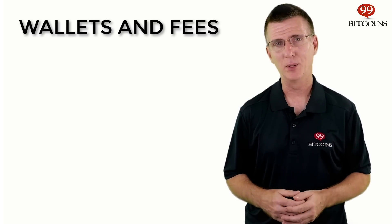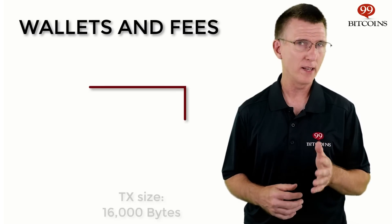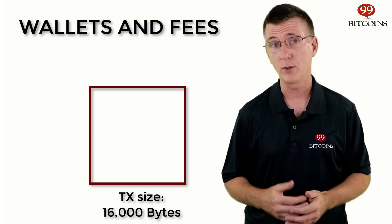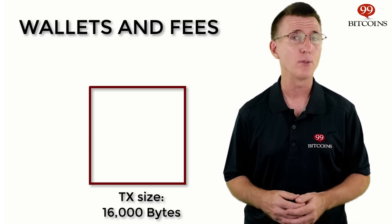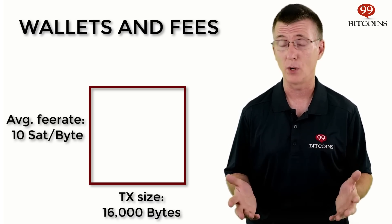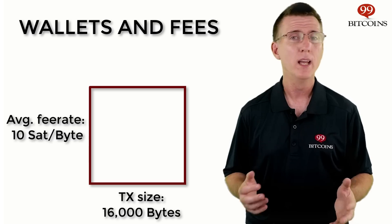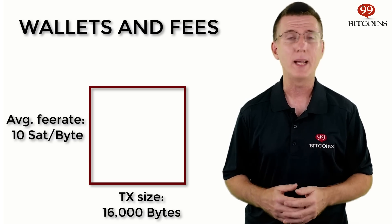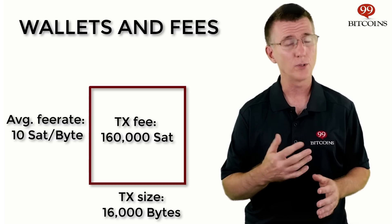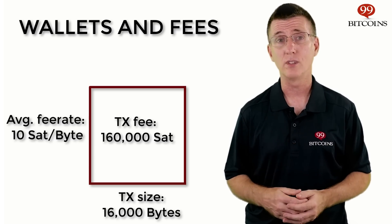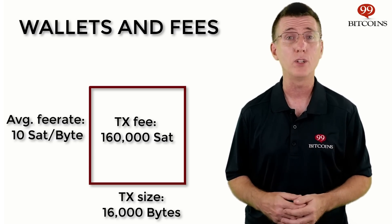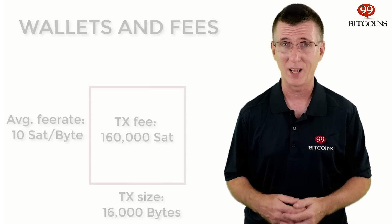Here's an example. If your transaction size is 16,000 bytes, and at the moment of transaction the average fee rate to be included in the next block is 10 satoshis per byte, then you'll need to pay 10 times 16,000, or 160,000 satoshis as a transaction fee, for a good chance to be included in the next block.